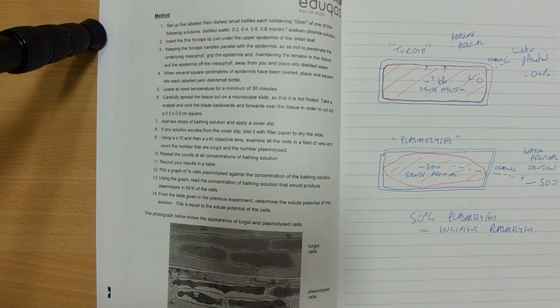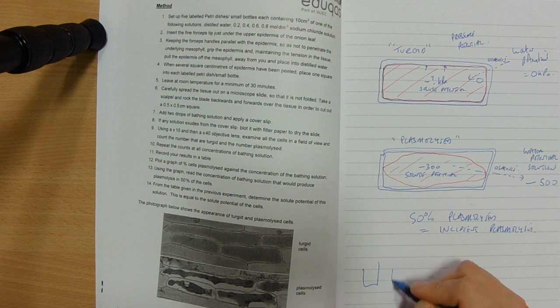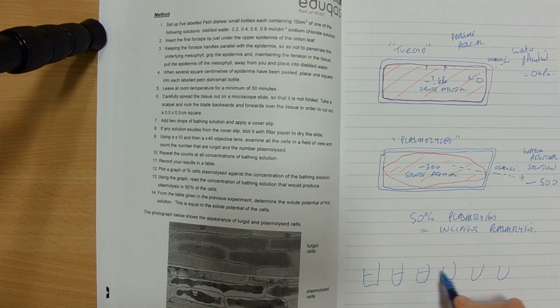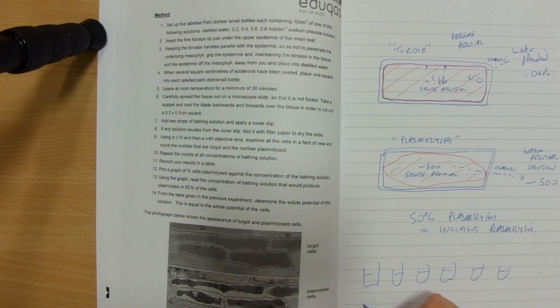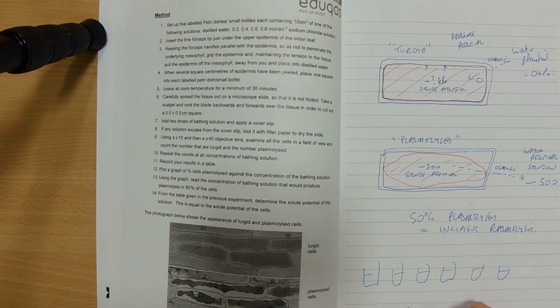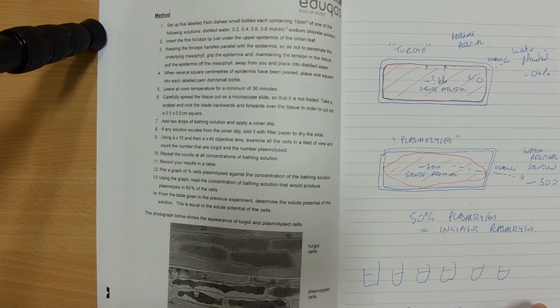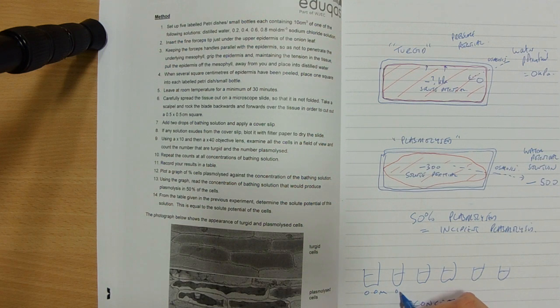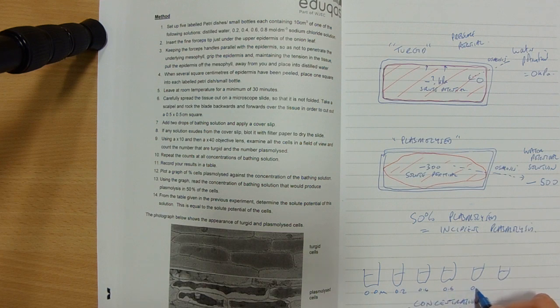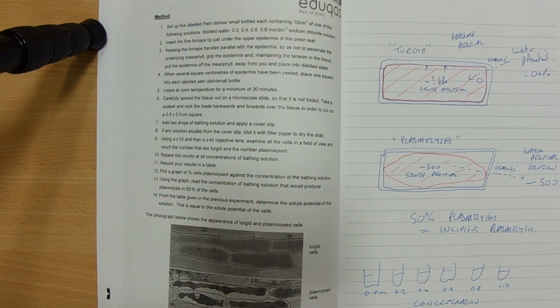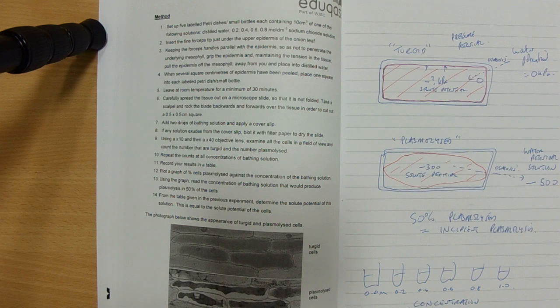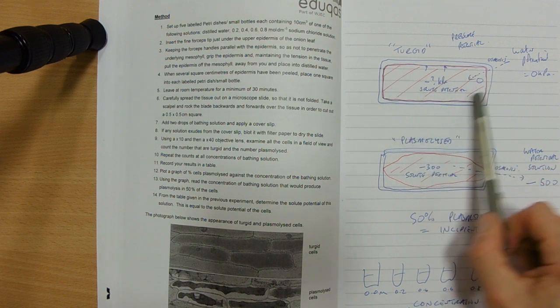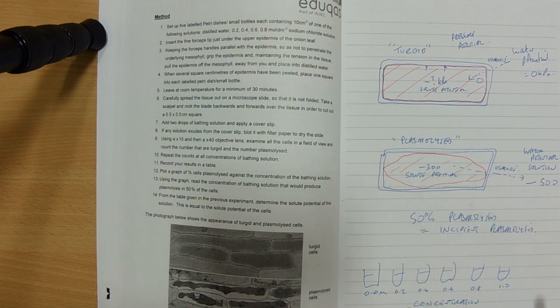So if 50% are plasmolyzed in any sample, any tissue that we look at, that is going to be equal to our incipient plasmolysis. So we set up this experiment and we look. We have one, two, three, four, five, six pots. We actually use petri dishes. And these are, our independent variable is the sucrose solution. And it's the concentration of it. So concentration of sucrose solution. And we start off with distilled water, so 0.0 molar. And then we have 0.2, 0.4, 0.6, 0.8 and 1.0. These are our concentrations of sucrose solution. And then we're going to look down the microscope and see what the cells look like. Count how many look turgid and how many look plasmolyzed.